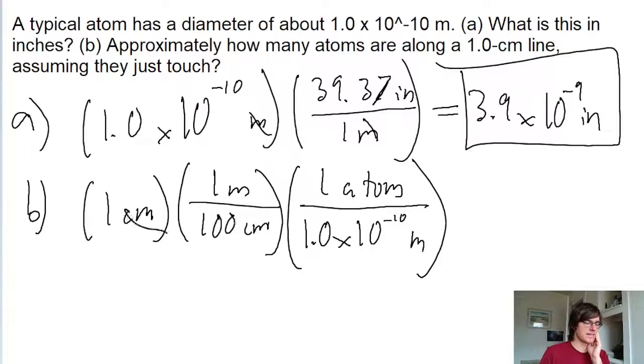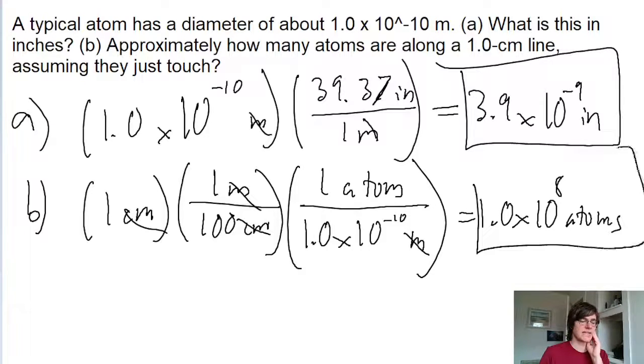So the centimeters cancel out and are replaced with meters. And the meters cancel out and are replaced with atoms. This gives us an answer of about 1.0 times 10 to the power of 8 atoms. And that's the answer to part B.